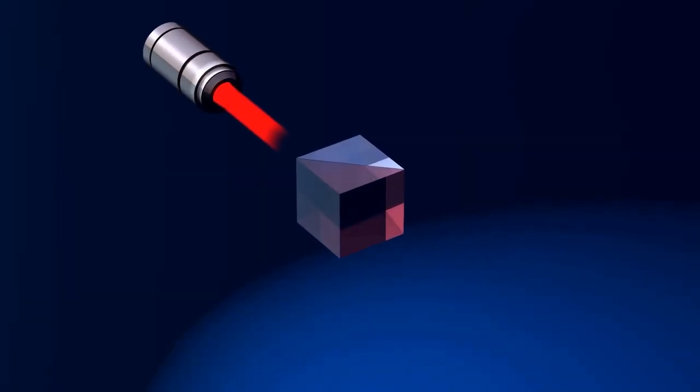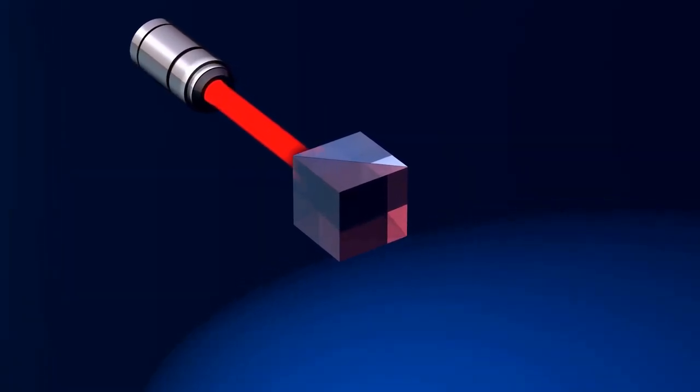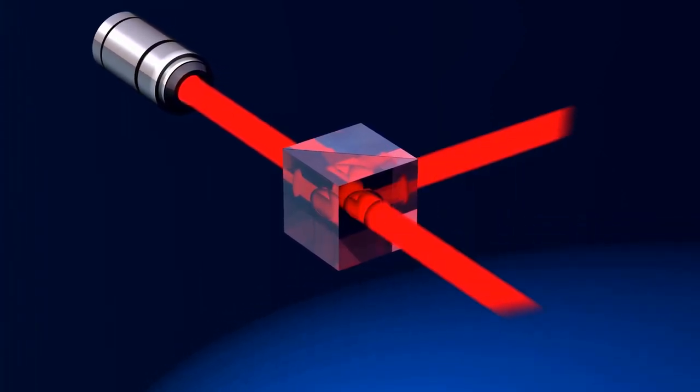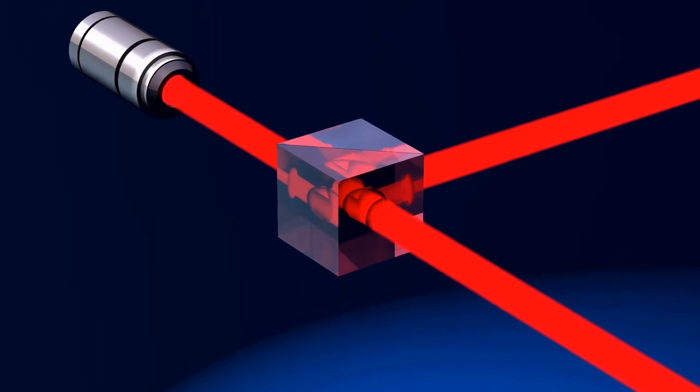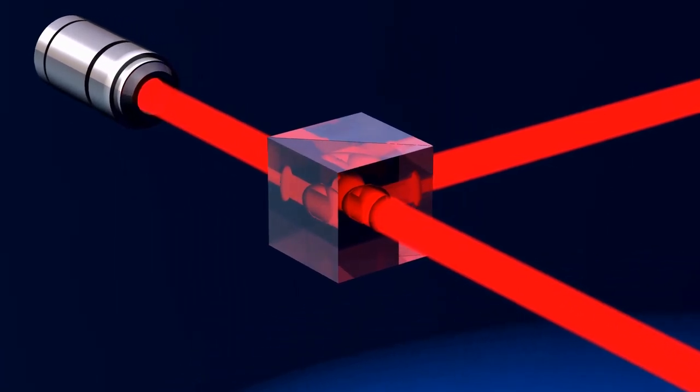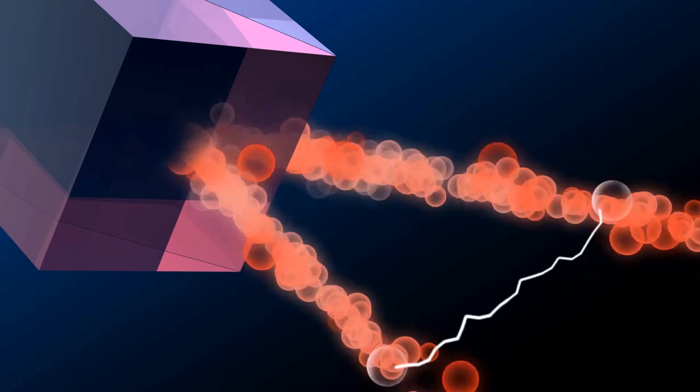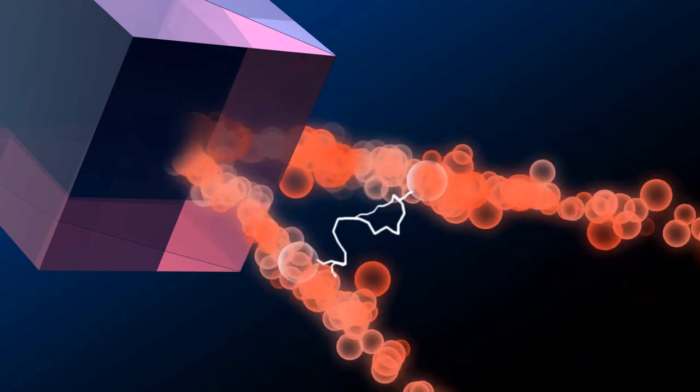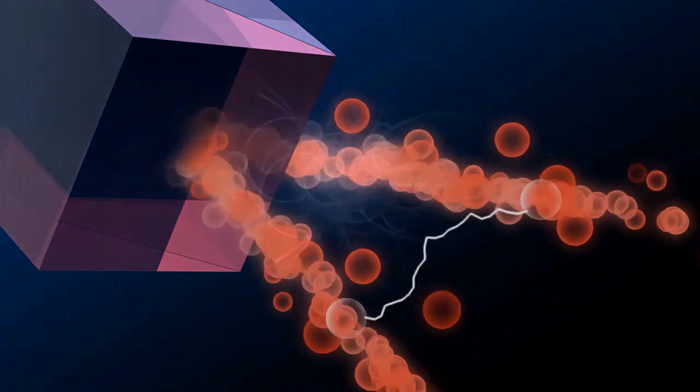To break through the Rayleigh limit, Supertwin uses a very peculiar feature of quantum physics. Under specific conditions, it is possible to generate particles of light, photons, that show a very odd behavior. Some of them become one and the same thing, even if they are in different places. They become entangled with each other.